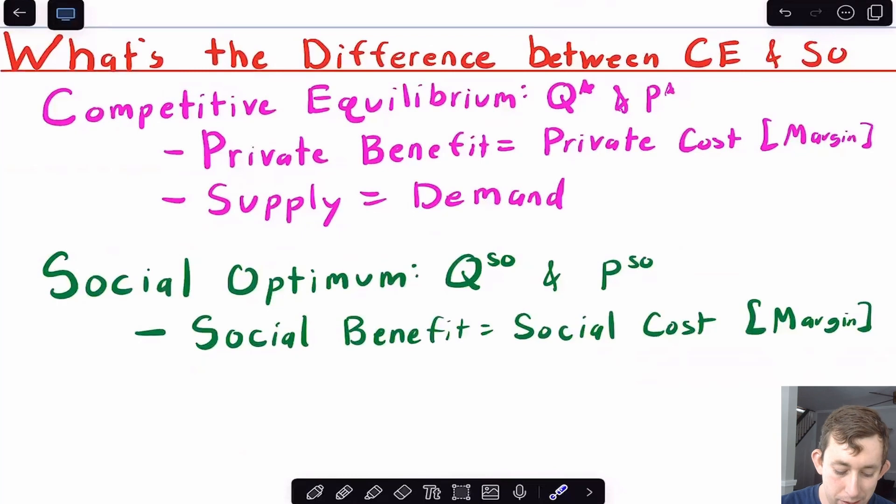the difference between competitive equilibrium and socially optimum is basically are you thinking about total benefits and total costs or just private benefits and private costs. So when we talk about a competitive equilibrium, when we first did supply and demand, we just set demand equal to supply, we found our q star and our p star.